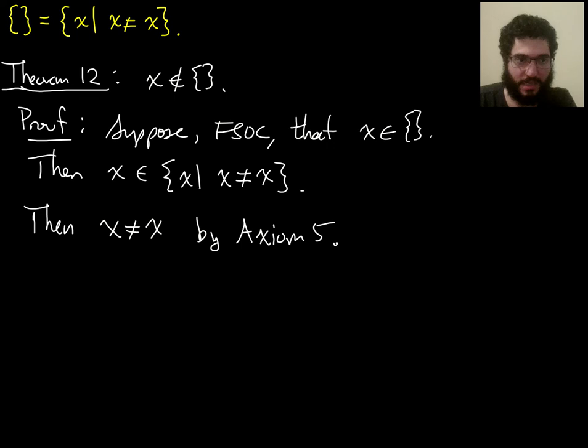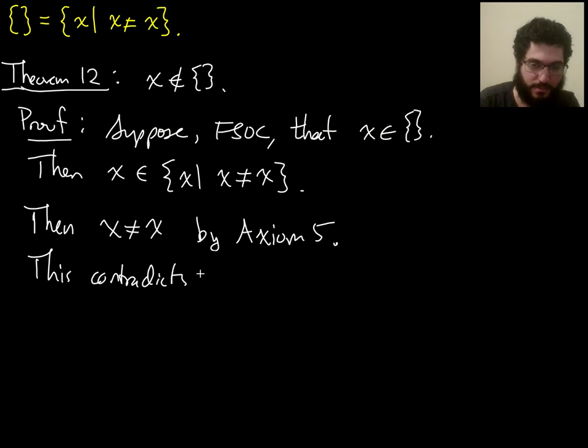So, we can just go ahead and say about the conclusion of this sentence, x not equals x, we can say this contradicts axiom 1. So, this is just a sort of shorter, more pretty way to write things, but it's just as much correct as what was before. Okay, and the proof ends there.